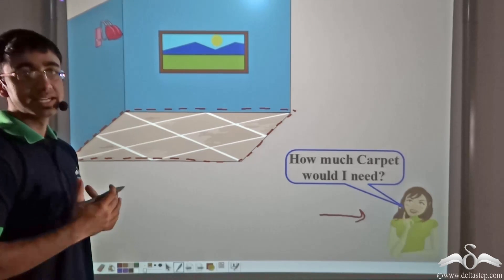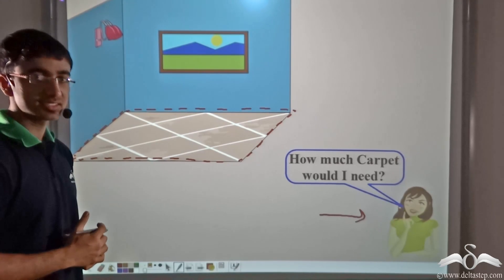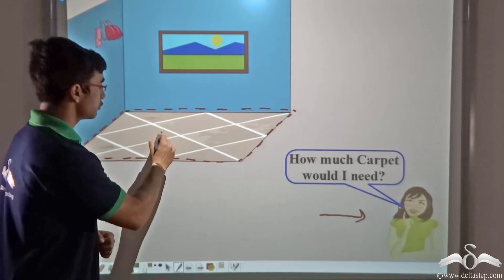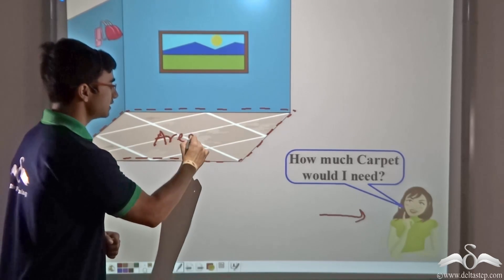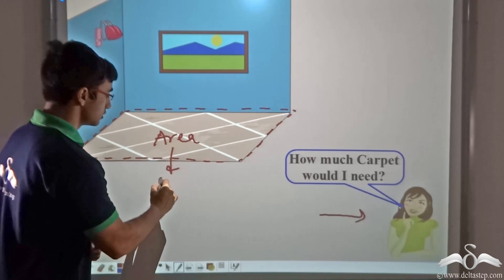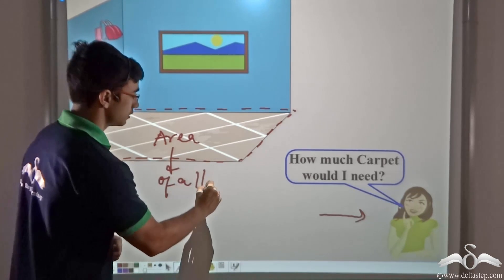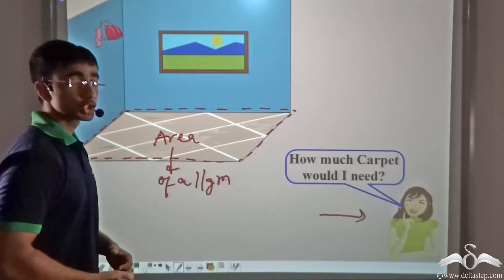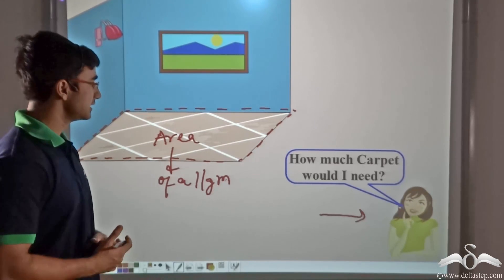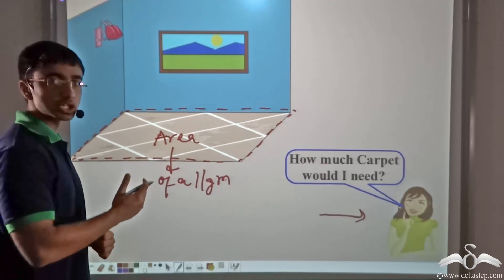So in other words, she will need to know the area of the carpet she needs. In order to know that, she will have to find out the area of the given floor, or in other words, the area of a parallelogram. So we found out how to find the perimeter of a parallelogram. Let us see how we can calculate the area of a parallelogram.